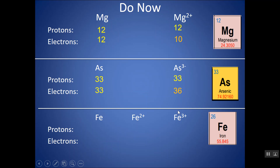Let's look at Fe, iron. It has an atomic number of 26, so in the atom with no charge, protons and electrons are equal — net charge of 0. For Fe2+, I would still have 26 protons because it's still Fe — the protons identify the element. Now I have a 2 plus charge, so I must have lost 2 electrons: there are 24 electrons, and that's why there's a 2 plus charge — 2 more protons than electrons. Whereas for Fe3+, same number of protons, but the electrons are now 23 — it's lost 3 electrons, giving it a 3 plus charge.